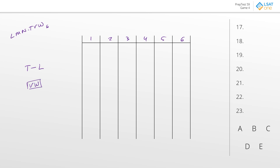Next, Toronto must be separated from Montreal by exactly two cities, but that could also go either way. We already have a T on the board, so let's set it up separately — T and M are going to have to have exactly two spaces between them. Depending on which way T goes, L might go after this block or within it, so it gets a bit messy.